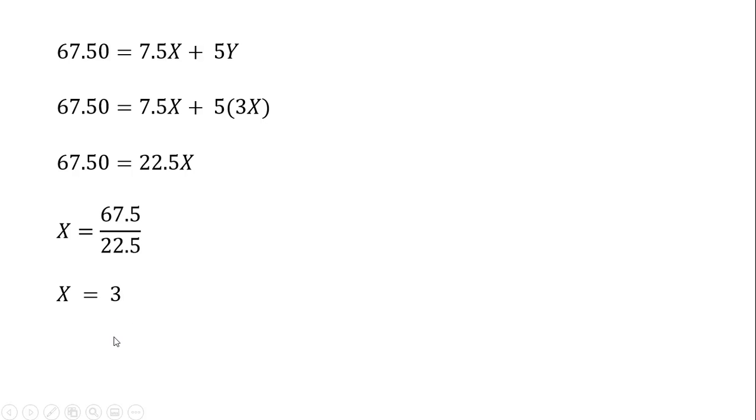As we saw in the last slide, since Y equals 3X and X is 3, Y equals 9. So that is our utility maximizing consumption bundle. The consumer will buy 3 units of good X and 9 units of good Y.